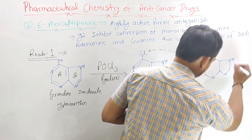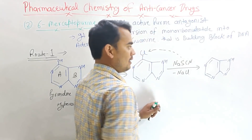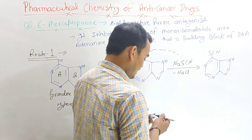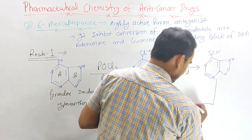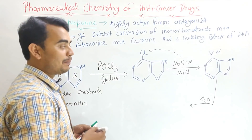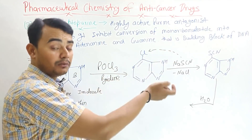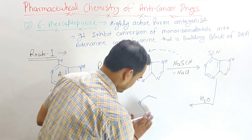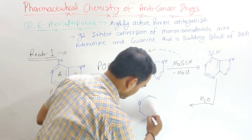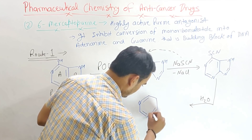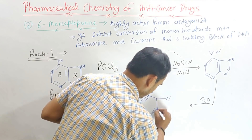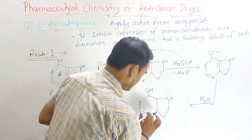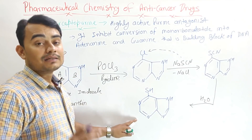The product is 6-thiocyanate purine. Now, this 6-thiocyanate purine, when hydrolyzed by water, the CN group of the thiocyanate is converted into a thiol (SH) group, giving the product 6-mercaptopurine.